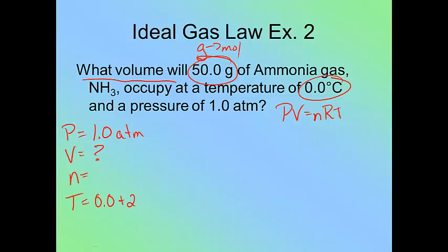And of course, we know that temperature is going to get added to 273 to make sure that it's in Kelvins. So this will be equal to exactly 273. So let's do our mole conversion. Oops. 50 grams of ammonia, NH3.